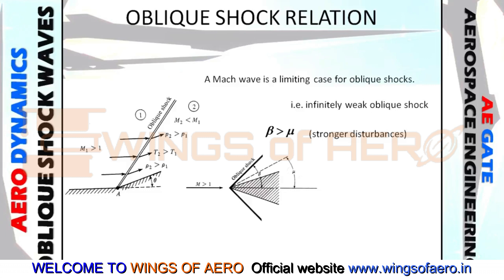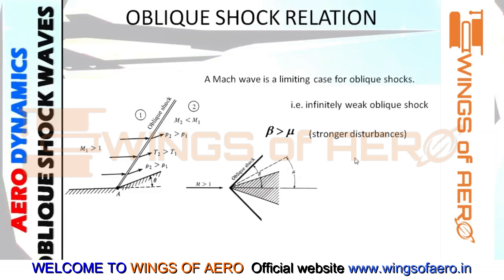Before covering the oblique shock wave relations, I want to explain what is meant by mu. Mu is a Mach wave. We say it is a strong disturbance when the shock wave is greater than the Mach wave. The Mach wave is the limiting case, and when the shock wave is greater than the Mach wave, we call it a strong disturbance. This is just a fundamental concept.